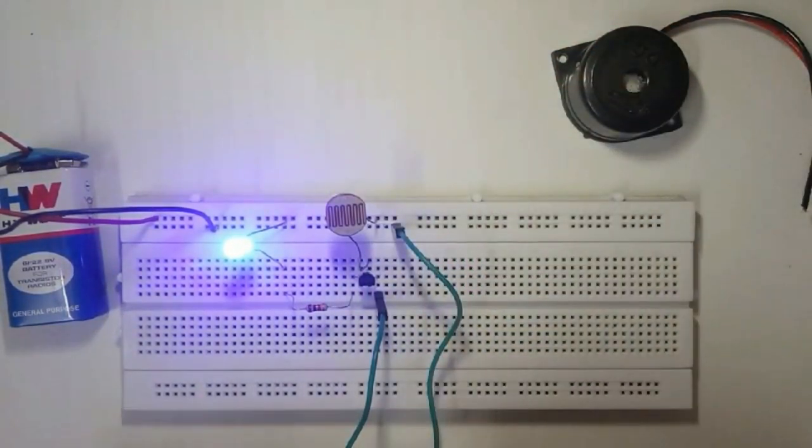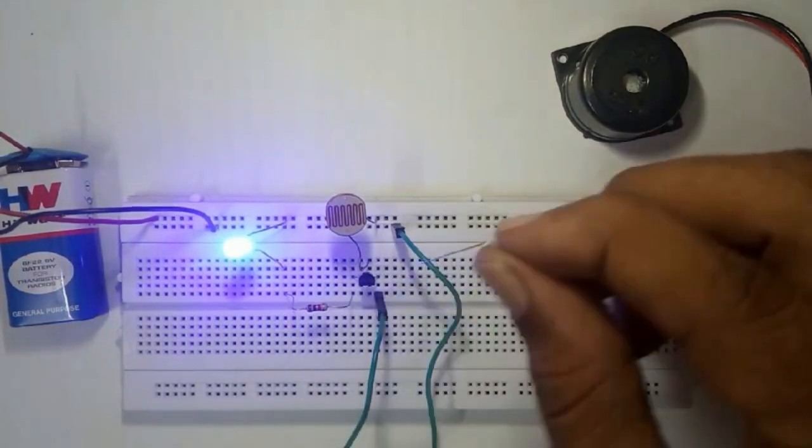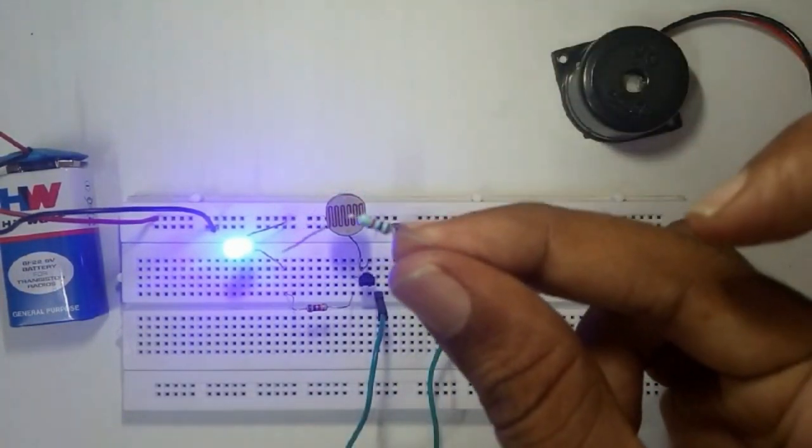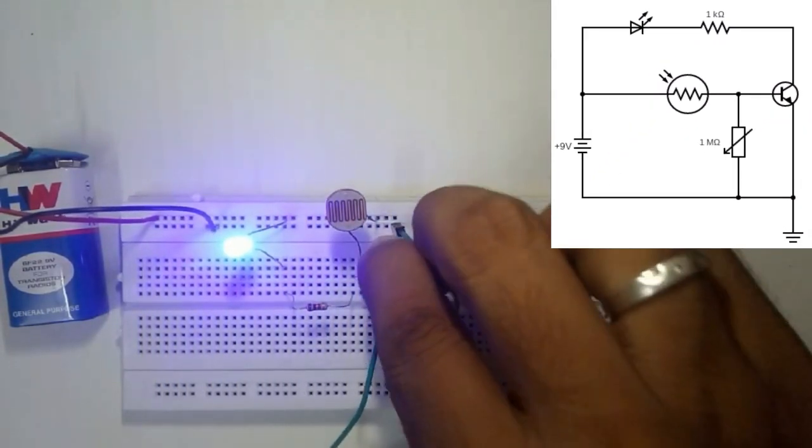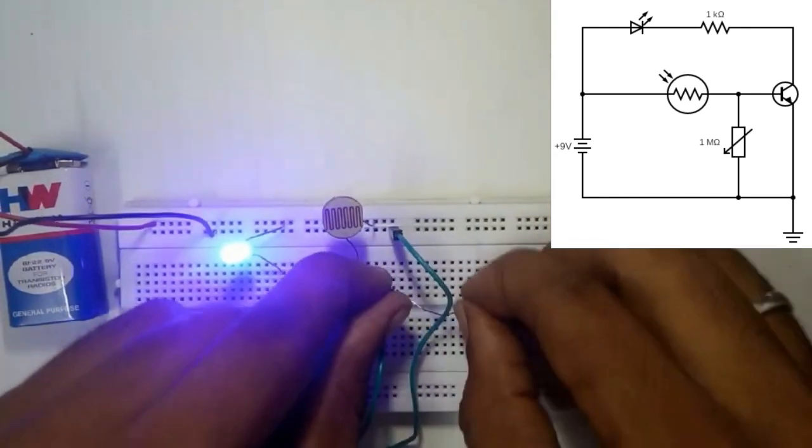So to arrest the minimum voltage from the LDR, we're going to use one megohm resistance here. So I'm going to connect one end of the base and the other end I'm going to put it to the ground.